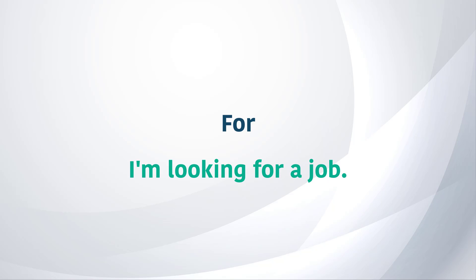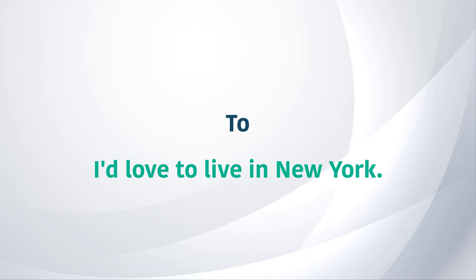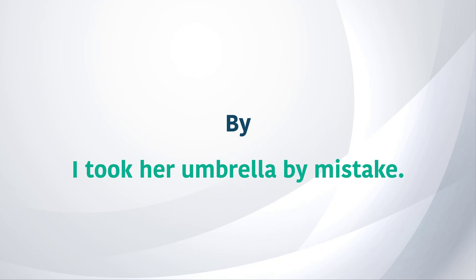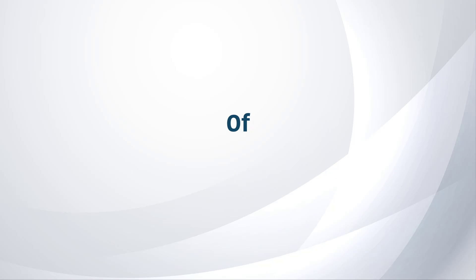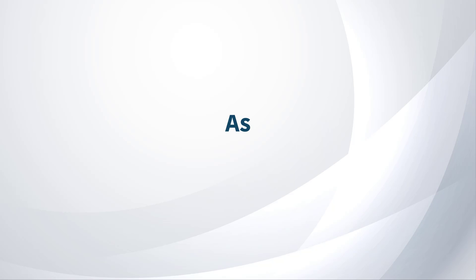For — I am looking for a job. To — I would love to live in New York. By — I took her umbrella by mistake. Of — What's the name of that plant? As — Do exactly as I say.